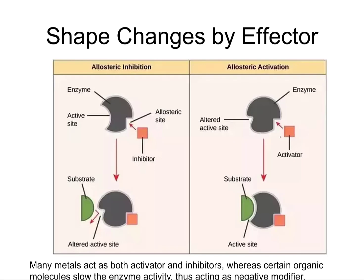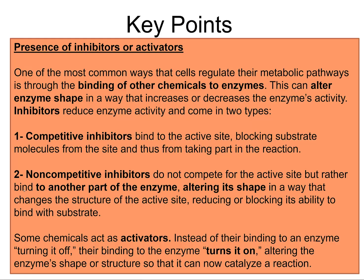There's also activation: the enzyme doesn't start unless there's an activator present. When the activator binds, it changes the shape of the enzyme so it can now bind the substrate — that's allosteric activation. The activator is absolutely required for the enzyme to work. This could be the result of a prior pathway that produces a product making a downstream pathway functional, because it needs that substrate to be processed. There is rhyme and reason to all of this.